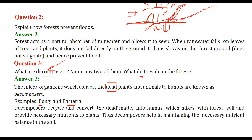Decomposers are recycling agents. When plants and animals die, decomposers recycle and convert dead matter into humus. This humus mixes with the forest soil and provides nutrients to plants. Decomposers play a role in maintaining the required balance of nutrients in the soil.